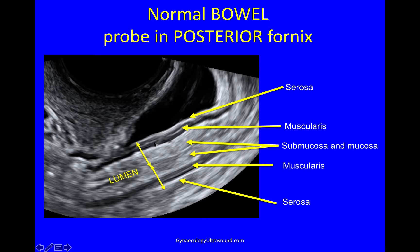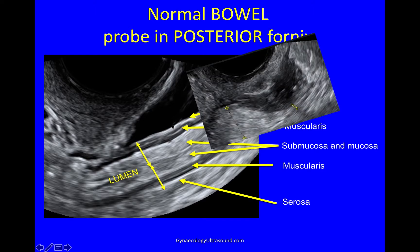Endometriosis is always in the anterior wall, and this is what it looks like. A little bit of normal muscularis — this is the layer that we're looking for, muscularis. There it's normal, there it's normal. And here you can see this thick lump of DIE that has caused smooth muscle hyperplasia.